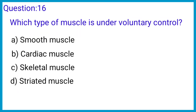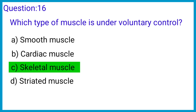Question number 16. Which type of muscle is under voluntary control? The correct answer is option C: Skeletal muscle.